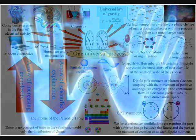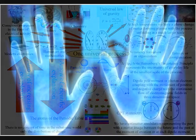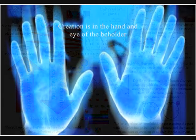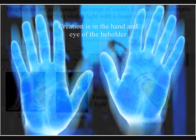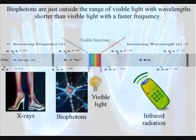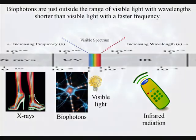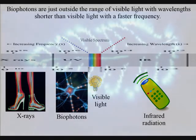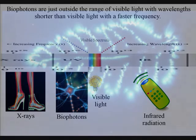Biophotons are simply light that is emitted from biological materials, such as the human body or any life form. These biophotons are just outside the range of visible light, with shorter wavelengths and faster frequencies.